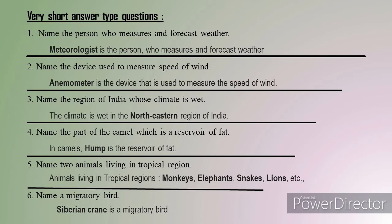Finally, we have very short answer type questions — six questions, all with easy answers. Answers are one or two words but you must write in a complete sentence, otherwise you will not receive full marks. First question: name the person who measures and forecasts weather. The person who measures and forecasts weather is a meteorologist.